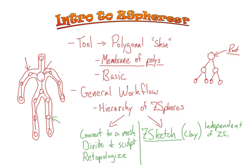We will get a chance to see all this later on, because it's one of my favorite ways to model anything — especially organics. You take the result of the Z-Sketch, convert that to a mesh, then divide it, sculpt it, and then re-topologize if necessary.